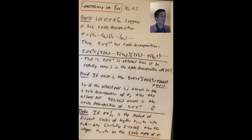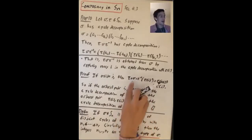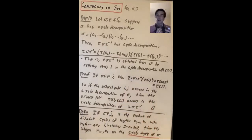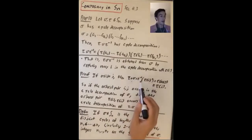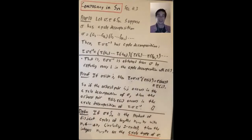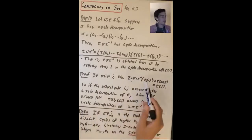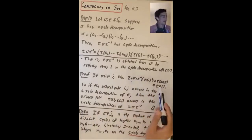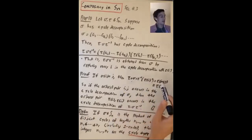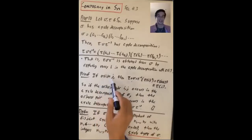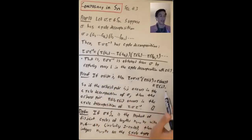What happens when you take the permutation τστ⁻¹ and apply it to τ(i)? It's more valuable to apply it to τ(i) rather than to i. Since permutation multiplication is associative, τστ⁻¹ applied to τ(i) equals τσ(τ⁻¹τ(i)) = τ(σ(i)) = τ(j).